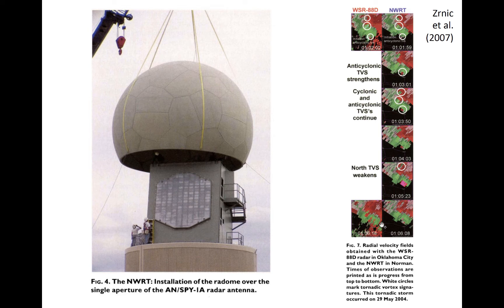Within those few minutes, dual counter-rotating tornado vortex signatures were seen by the phased array radar. By the time the WSR-88D scanned the area again, the signatures had weakened. Thus, the phased array radar enables more rapid and consistent detection of short-lived events that the WSR-88D — the weather service radars — may miss altogether.